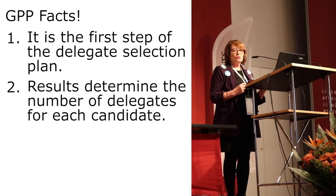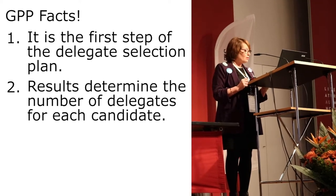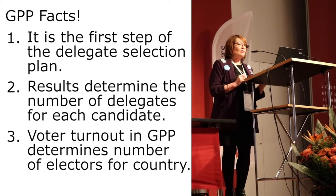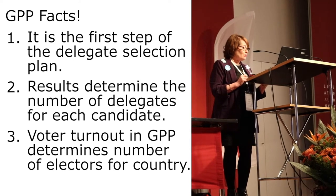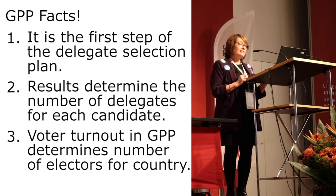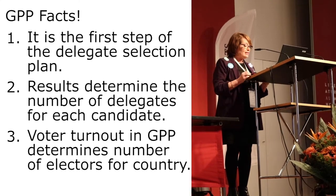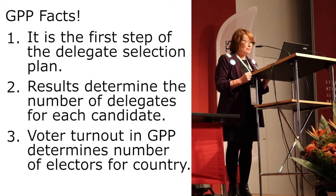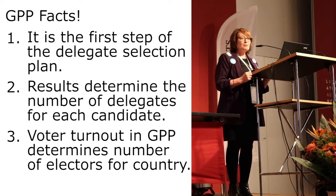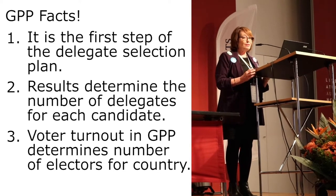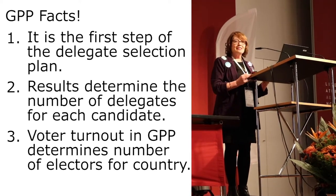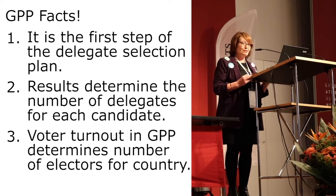The details are all on the DA website at democratsabroad.org — it's on the home page. We also have electors at our global convention, which will be held in Toronto. The number of votes each country committee receives for their electors is based on the percent of voters from their country that vote in the GPP. So the more of our Germany members that vote, the more votes we'll have as electors at the convention.